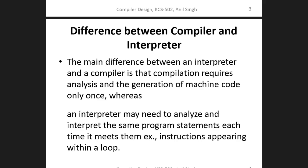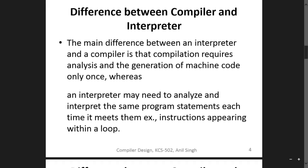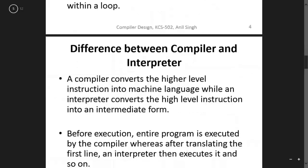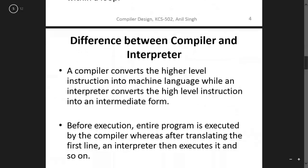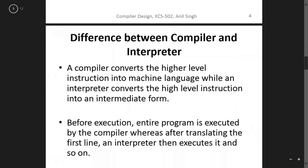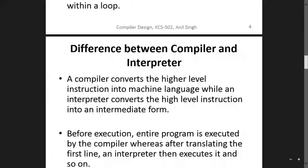An interpreter needs to re-read and interpret the same program statement each time it encounters them. So when the program is written, it can re-read and interpret it. If the interpreter is appearing within a loop, and it is in the form of a loop, it will re-read that code on each pass through the loop.